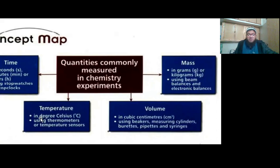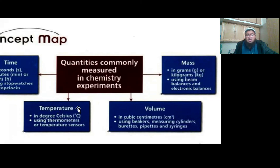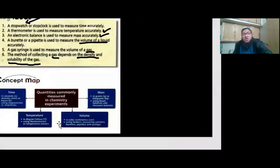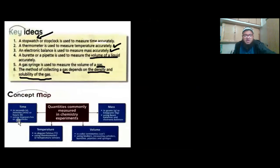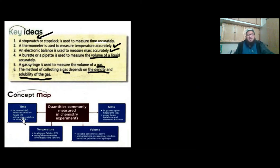Moving on to temperature: measured in degrees Celsius, but degrees Celsius is not the SI unit — it's Kelvin. The standard of measuring temperature is Kelvin, but degrees Celsius is also very commonly used. Thermometers are the standard, but temperature sensors can also be used. Finally, time is measured in seconds, and seconds is the SI base unit. Other units such as minutes and hours exist, and you should know the interconversion, but the SI unit is seconds only. Stopwatches are used as the standard. This sums up this chapter.